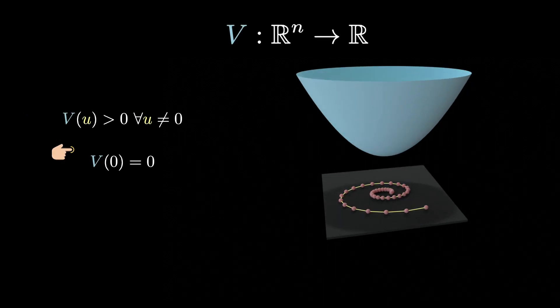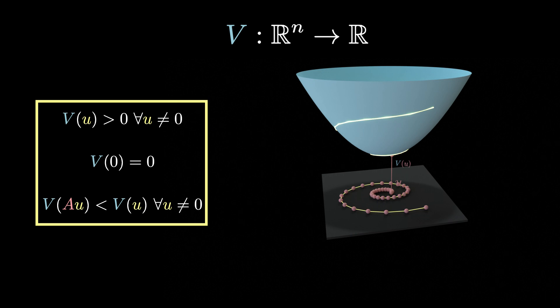Imagine there is a function v that is positive everywhere except at the origin where it's 0, such that its value decreases after each step of our dynamical system. If such a function exists, then all trajectories must converge to the origin.